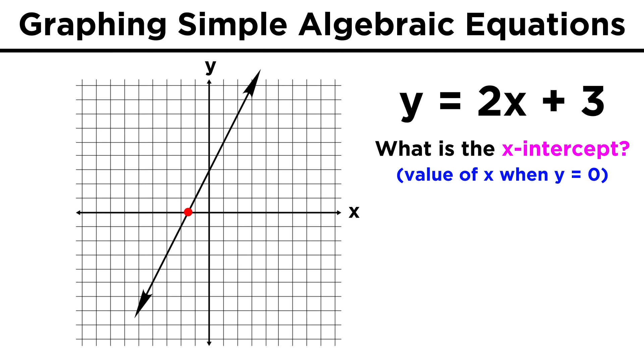At that point, the x value is right in between negative one and negative two, so it must be negative three halves. Of course, we can very easily do the algebra to verify this. Plug in zero for y, subtract three, divide by two, and we quickly get the solution that way.